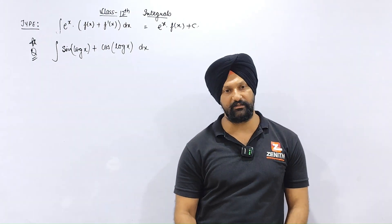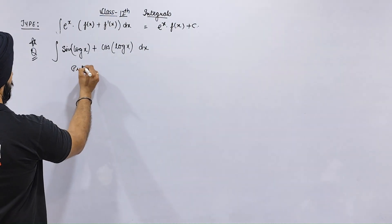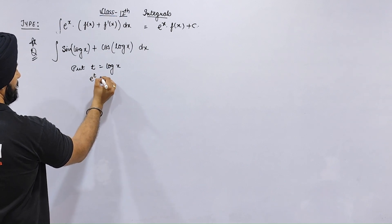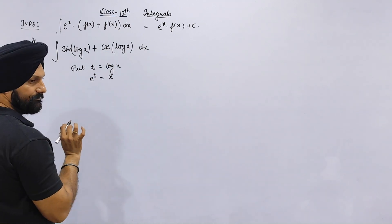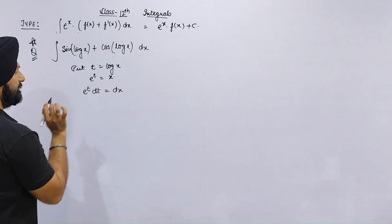Log x is equal to t. So e to the t equals x. So what will e to the t dt be? dx.